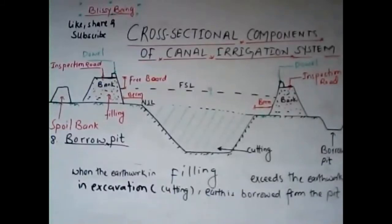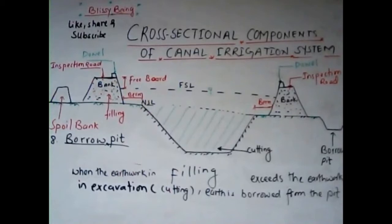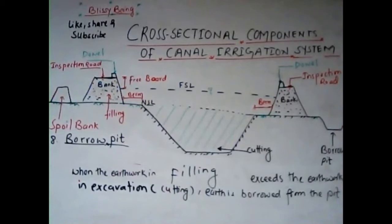The eighth cross-sectional component is the borrow pit. Whenever the earthwork in filling exceeds the earthwork in excavation (cutting), the earth has to be brought from somewhere. The pits dug for bringing this earth are known as borrow pits. If excavated outside the channel they are external borrow pits; if excavated within the channel they are internal borrow pits. Bringing soil from a distance is costly, and nearby pits may cause mosquito nuisance due to collection of rainwater, hence external borrow pits are not preferred.